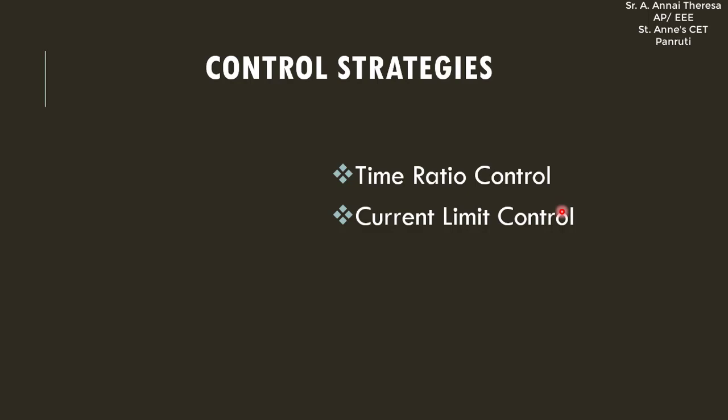In this power electronics session, we are going to see about the control strategies in the DC chopper. We know already what a chopper is — it converts fixed DC voltage into variable DC voltage. A chopper is used to step up or step down the input voltage. This is done by varying the duty cycle value, that is the alpha value.